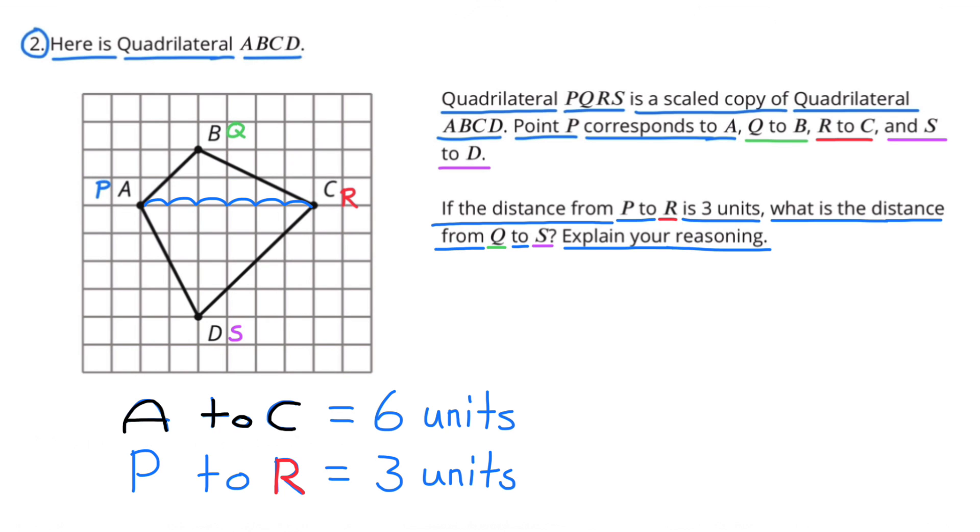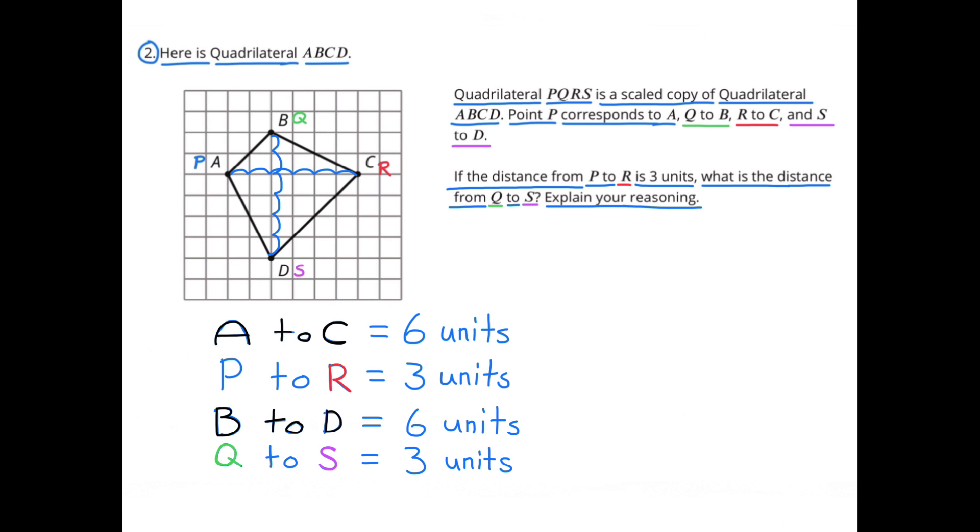Since quadrilateral ABCD is shown, and A to C is actually 6 units, and A to C corresponds with P to R on the scaled copy, and they tell us that P to R is worth 3 units, and on quadrilateral ABCD the distance between B to D is also 6 units, so the scaled copy from Q to S would be 3 units.